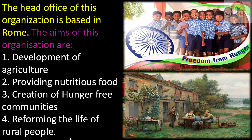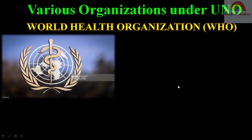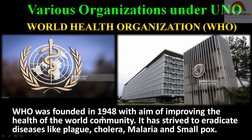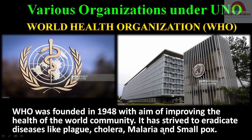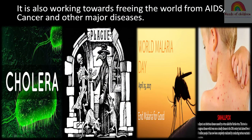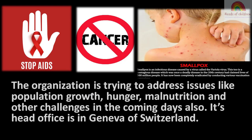The next important organization under UNO is WHO — World Health Organization. WHO was founded in the year 1948 with the aim of improving the health of the world community. It has strived to eradicate diseases like plague, cholera, malaria, and smallpox. It is also working towards freeing the world from AIDS, cancer, and other major diseases, and is addressing issues like population growth, hunger, and malnutrition. Its head office is located in Geneva, Switzerland.